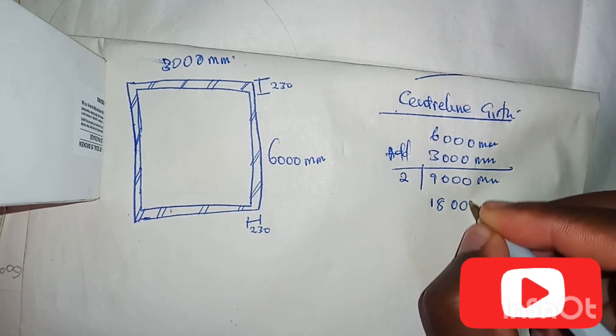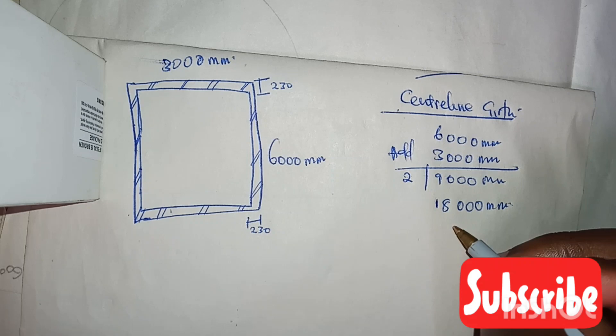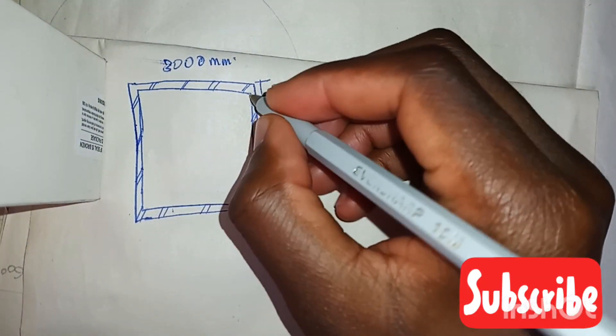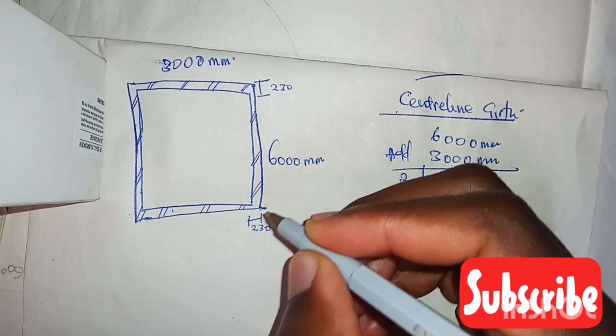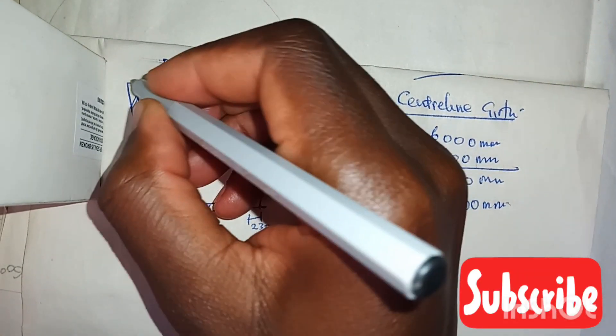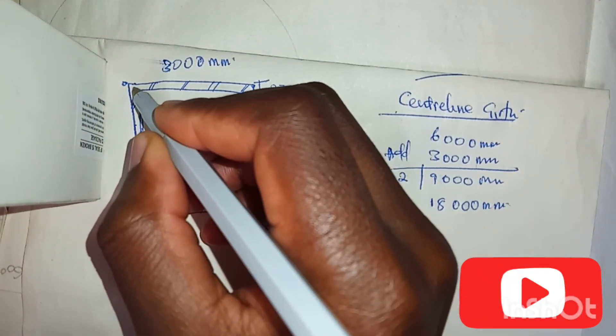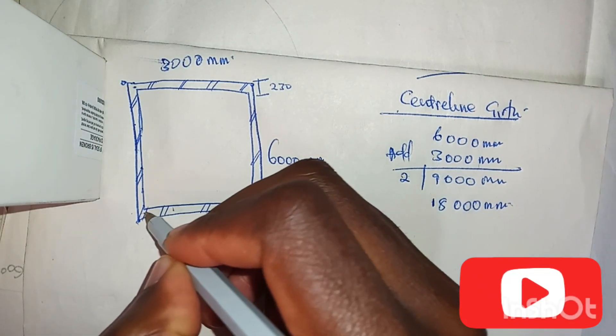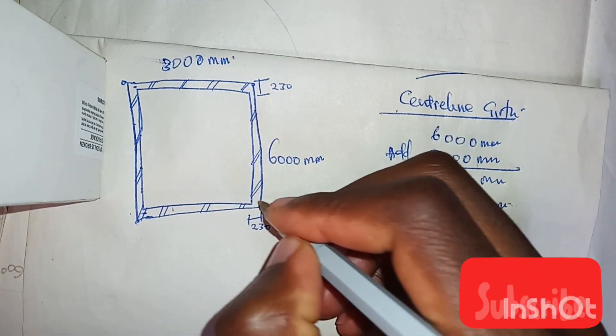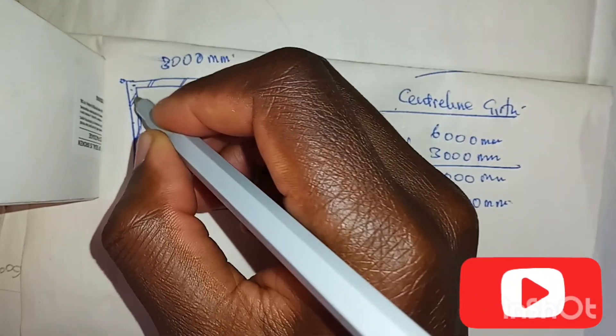But 18,000 is from this point to this point and to this point to this point. But the center line should be from this point at the middle of the wall to this point, and from this point to this point at the middle, not at the end, at the middle of this wall.